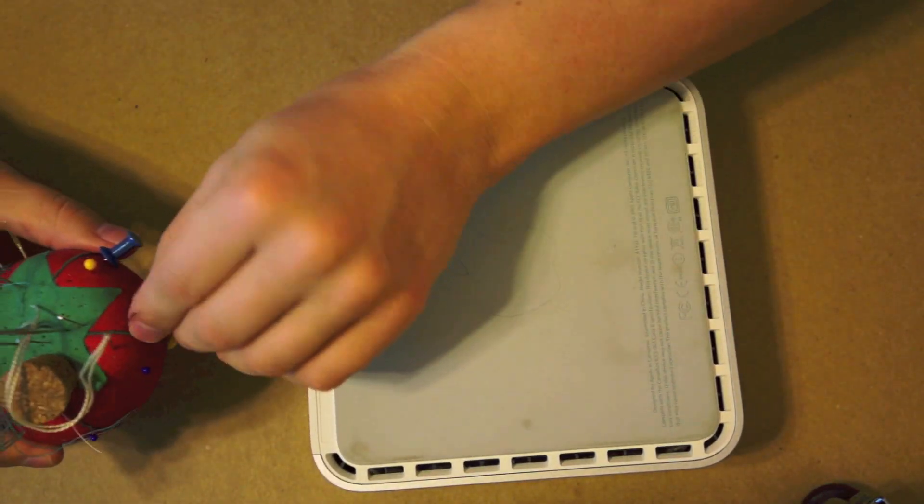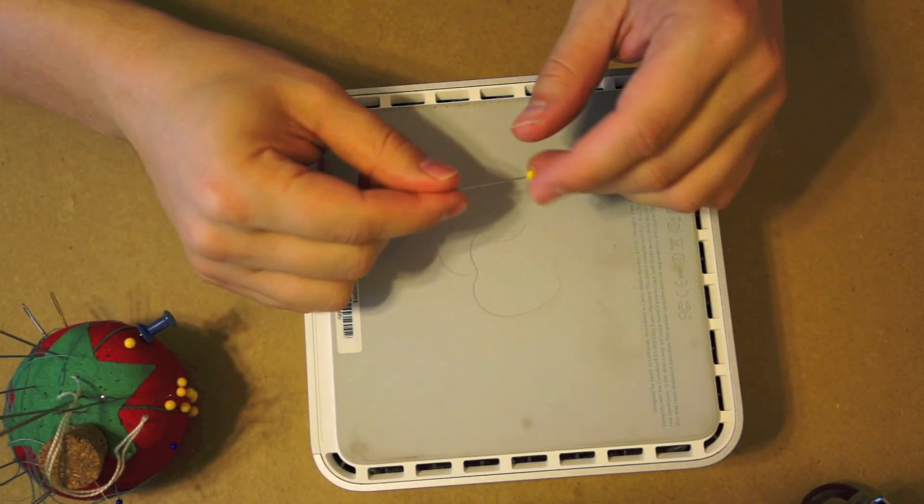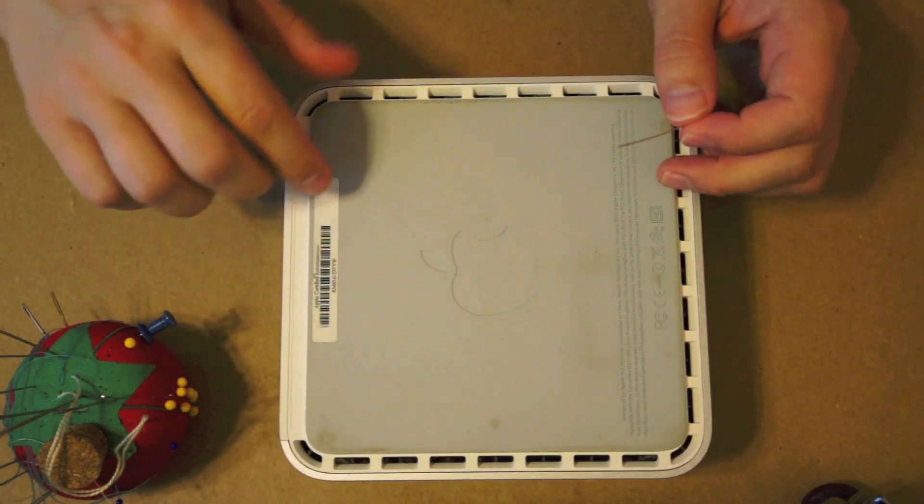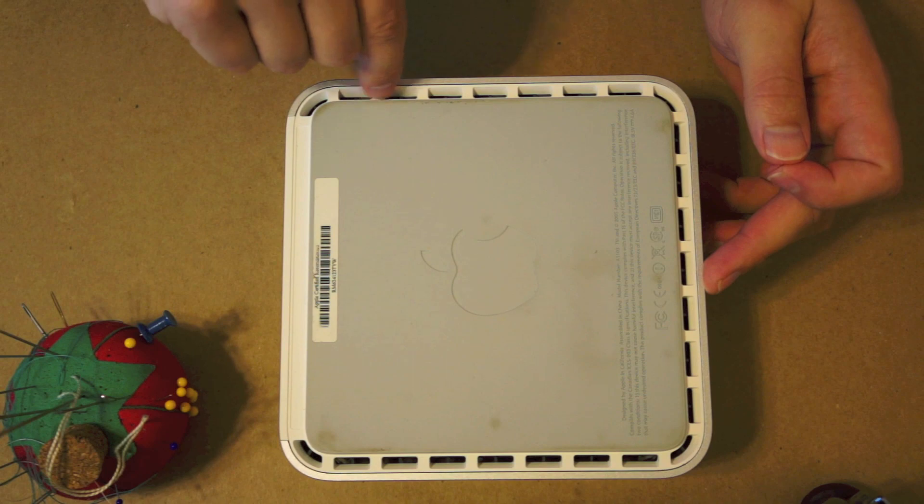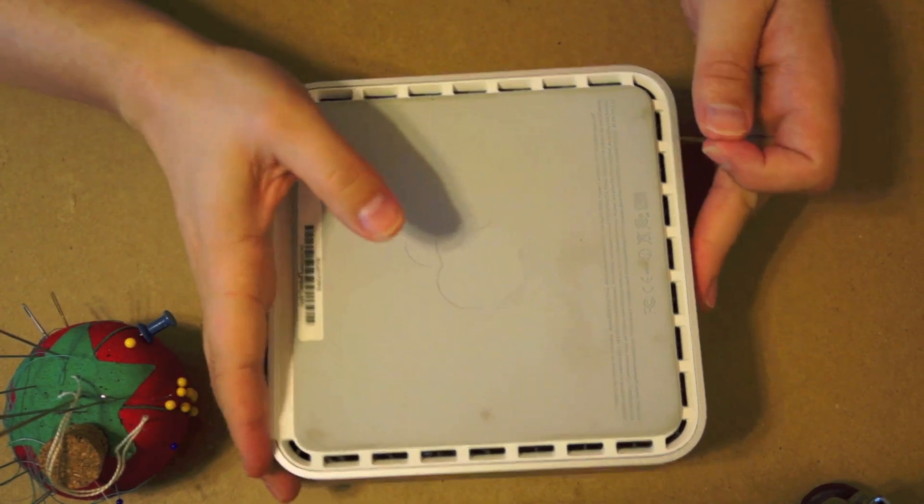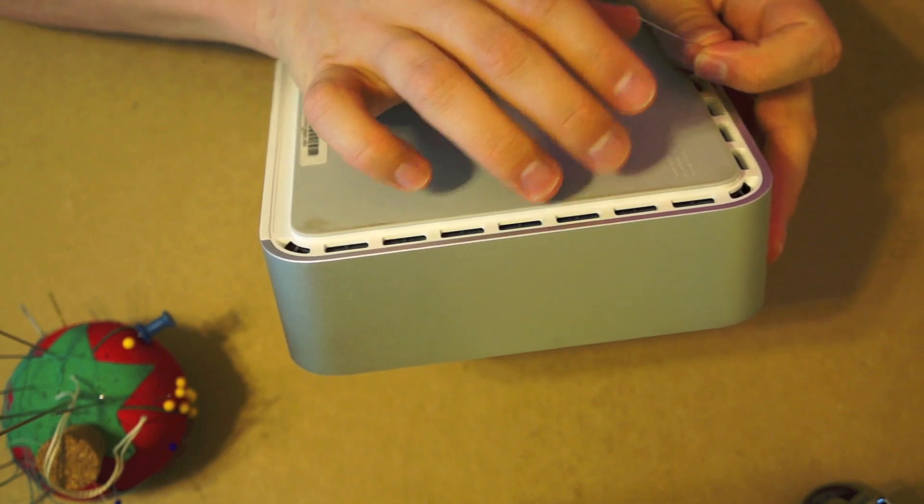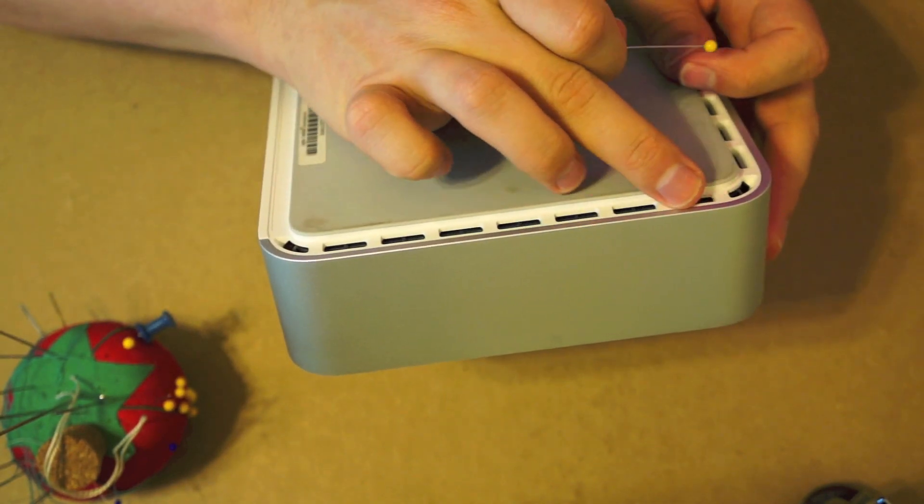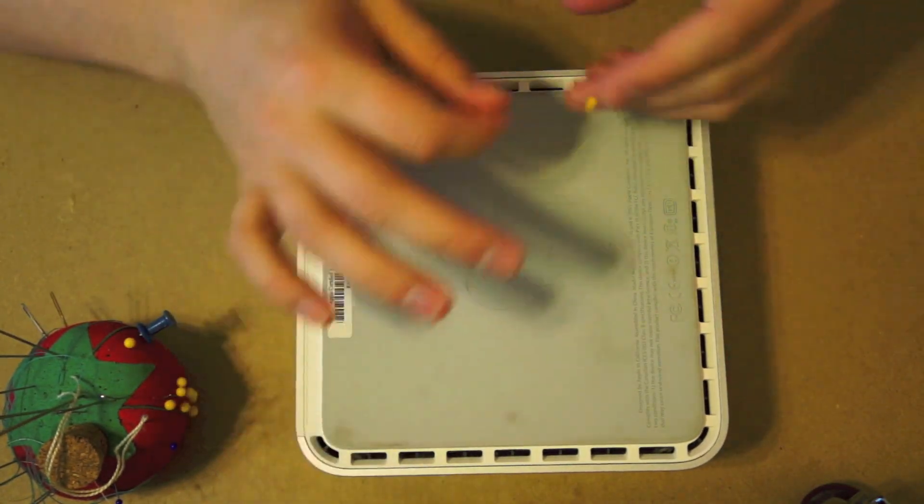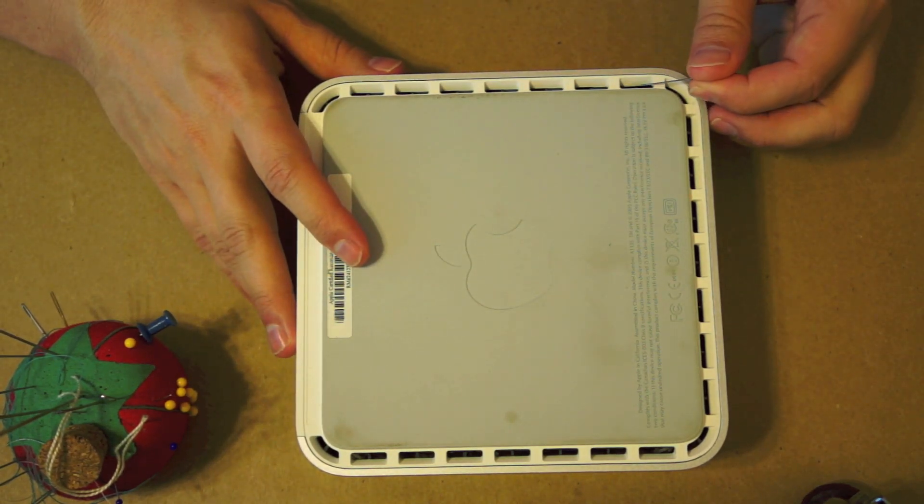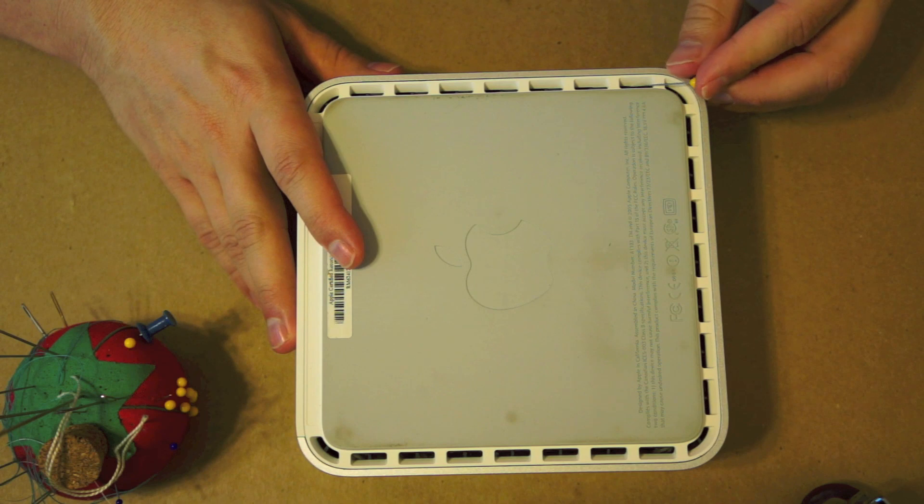And to do it I need these long pins. So the first thing basically we need to do is all around the edges of this there are little hooks that hold the metal body here to the plastic. And so we need to use these pins to pull away the hooks from the edges so we can lift off the top. And to do that we need to slip them in here and you can feel it catch the hook and you just push it in.